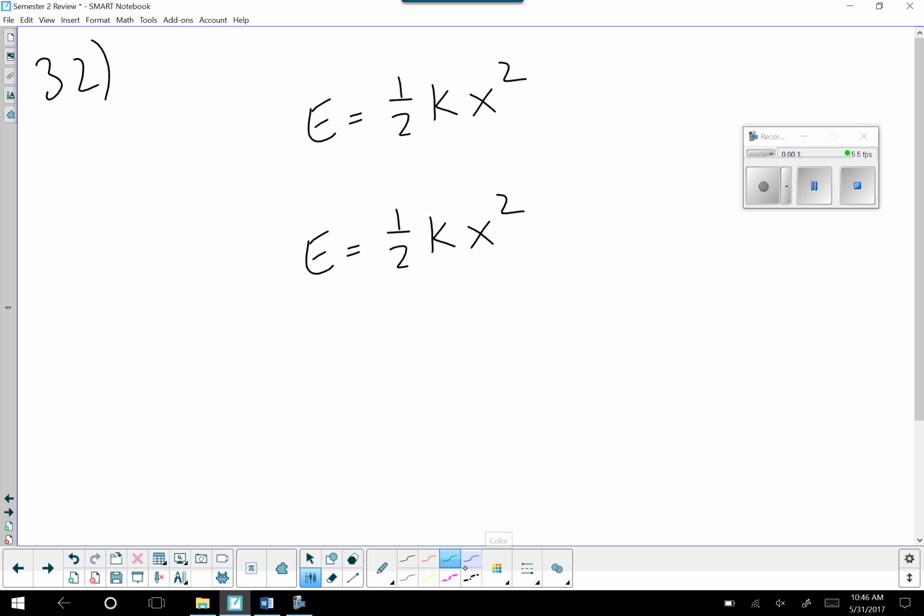So I'm going to undo the multiplying by 1 half first by multiplying both sides by the reciprocal of 1 half, which is 2. So we get 2e equals kx squared.